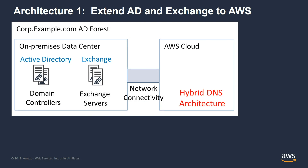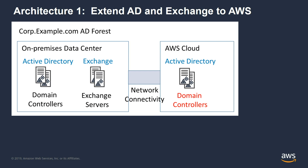After establishing network connectivity, we want to establish a hybrid DNS architecture. One of my colleagues is producing a video on this topic as well. What we want to do here is ensure that resources either on-premises or in the AWS Cloud can issue DNS requests and resolve resources on either side. Once you establish that, we can start to set up domain controllers in the AWS Cloud — a couple of EC2 instances promoted to be Active Directory domain controllers in your existing on-premises forest, basically extending your AD forest out to the AWS Cloud.